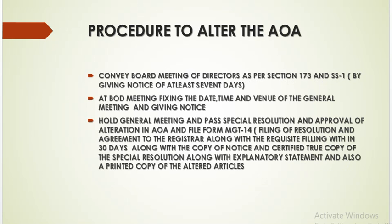What is the procedure to alter the article of association? The company has to convene a board meeting of the directors as per Section 173 and Secretarial Standard 1 by giving notice of at least 7 days. At the board meeting, the date, time, and venue of the extraordinary general meeting is fixed and a 21 days clear notice is given. The extraordinary general meeting is then held on the appointed day and the special resolution is passed.